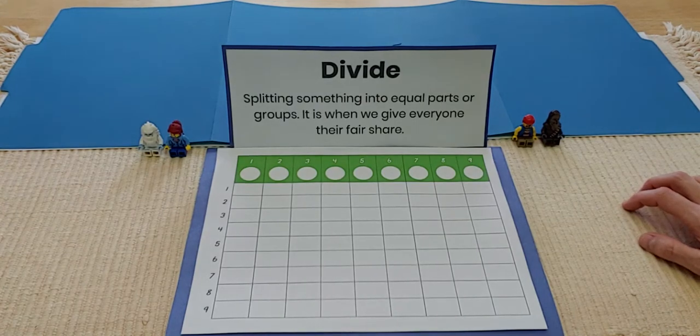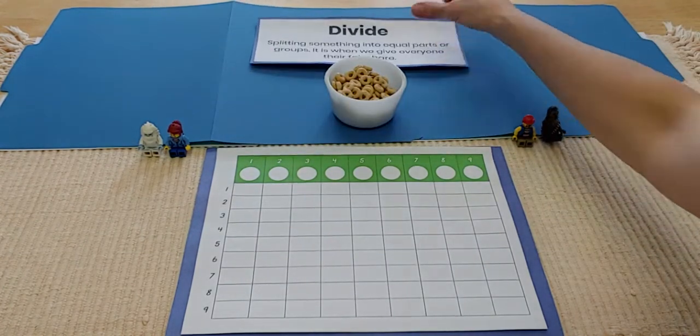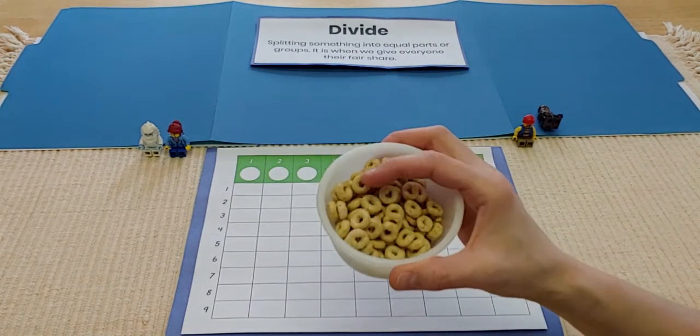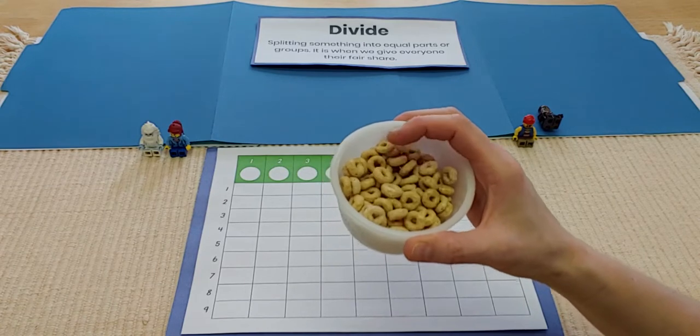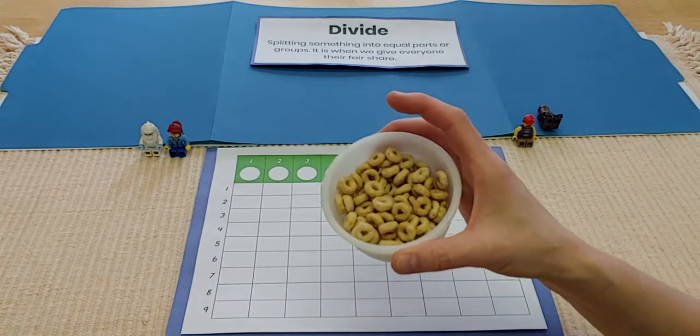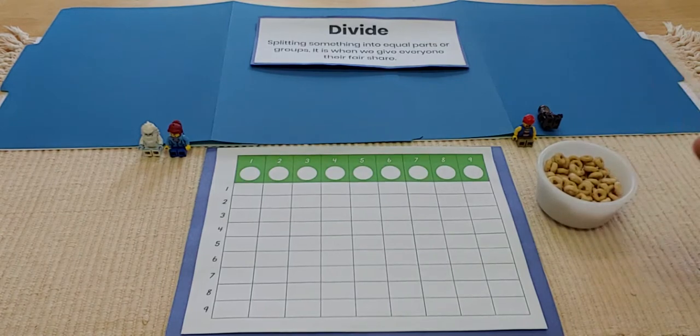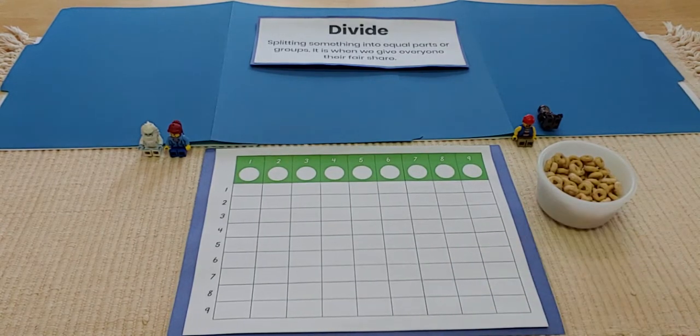Something else you'll need are counters. I'm using Cheerios for my counters. They're small and then when I'm done using them, I can eat them up. You can use food, pennies, beads, buttons, whatever you have lying around your house.